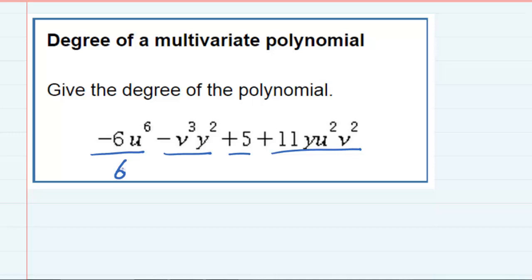But the second term has two variables, v^3 and y^2, and when that happens we have to add up those exponents to get the degree. So this term has a degree five.